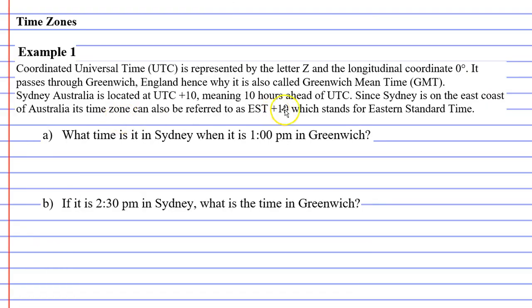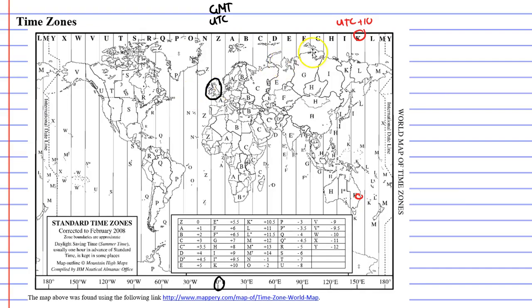Now, since Sydney is on the east coast of Australia, its time zone can also be referred to as EST plus 10, which stands for Eastern Standard Time. So quite often, countries, rather than going UTC plus 10, they might come up with their own acronym. And Sydney, the east coast of Australia came up with EST plus 10. They wanted to say Eastern Standard Time plus 10. They didn't want to put the UTC at the beginning. And there's lots of countries that have done this.